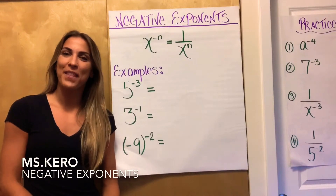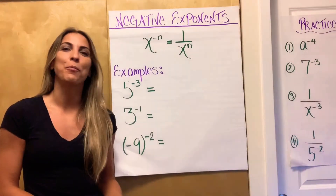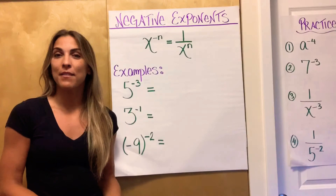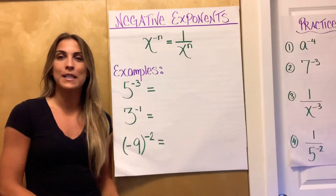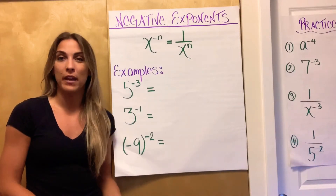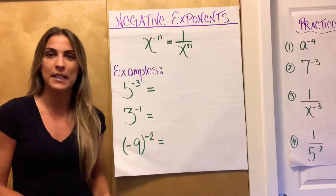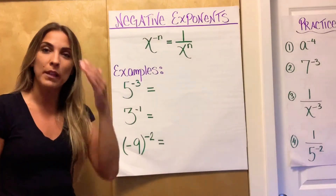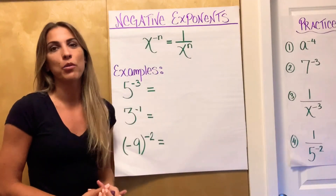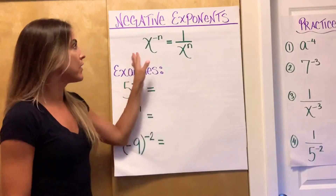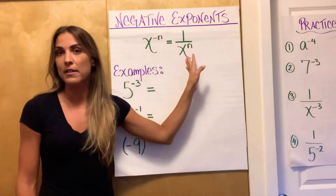Hi guys, today we're going to talk about the negative law of exponents. The purpose of the negative law of exponents is to further simplify expressions that have negative exponents. For an expression to be considered completely simplified, we normally don't want to see any negative exponents. So this law helps us change them into positive ones.